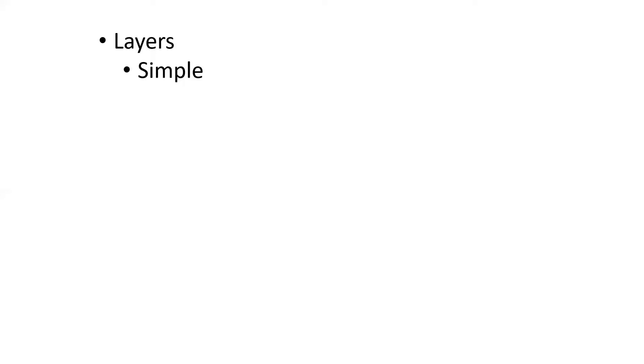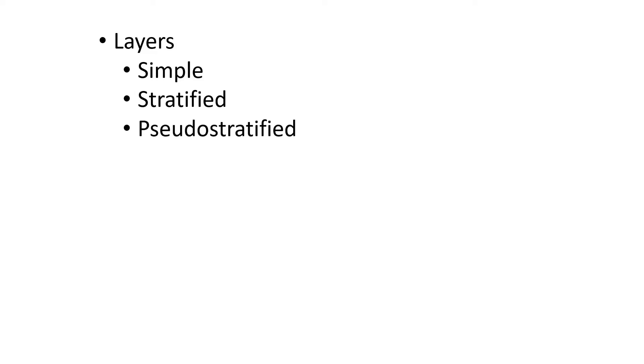With layers, there are three possibilities. Simple means there's only one layer of epithelial cells and they're all touching the basement membrane. Stratified means multiple epithelial cells are stacked on top of each other, with a bottom layer touching the basement membrane and more layers on top. And then there's a special case called pseudostratified, which looks like it's stratified but all the cells are actually touching the basement membrane.